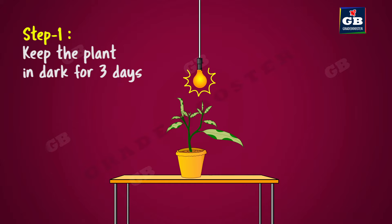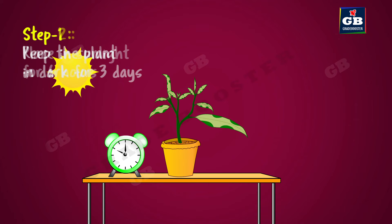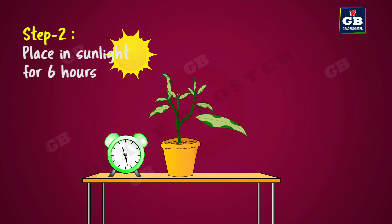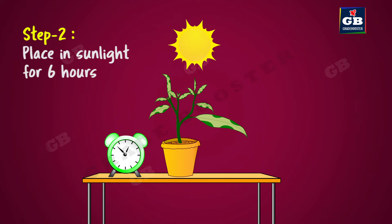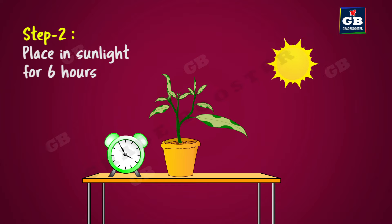We have to keep the plant in dark for three days. Do you know why? So that all the starch present in the plant gets used up. Now, place this plant in sunlight for about six hours.